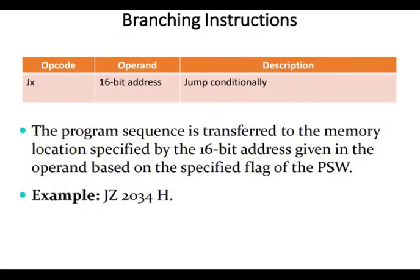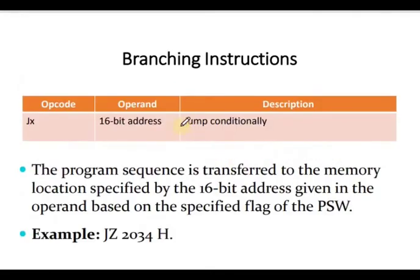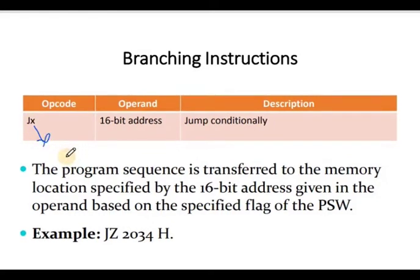What is a conditional JMP? Here, branching instructions jump conditionally. The syntax is JX where X takes different values — for example JZ, with a 16-bit address.